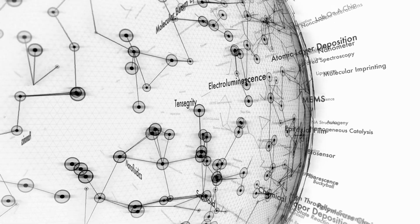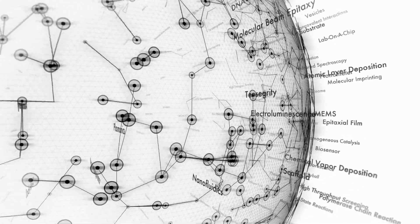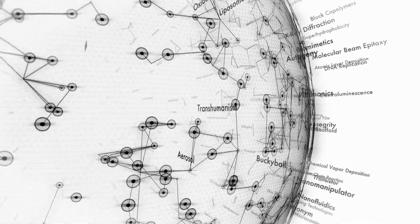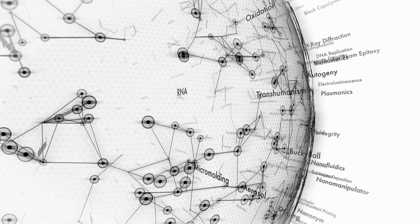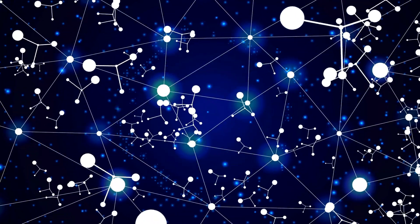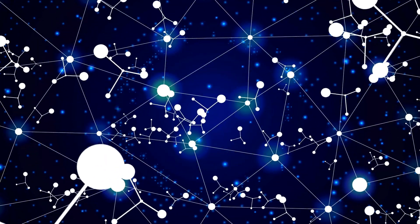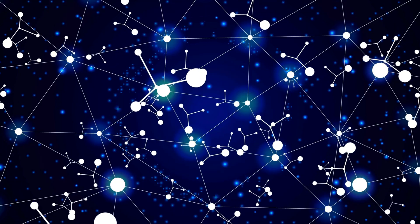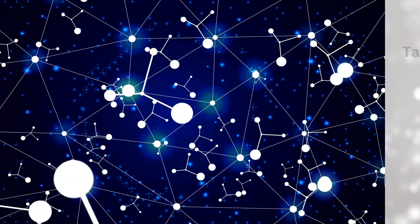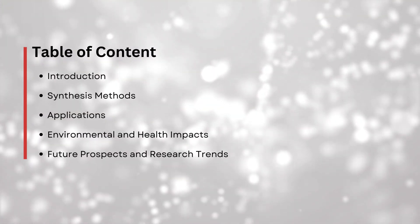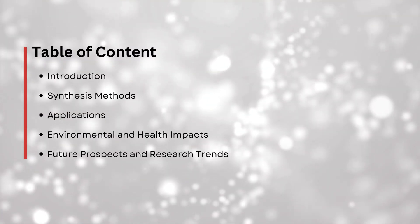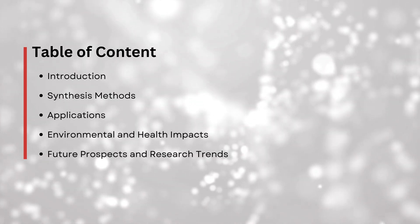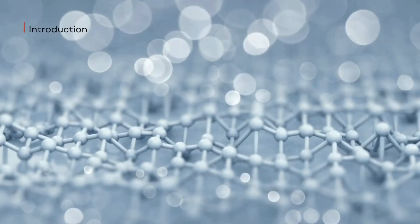Hi, everyone. Welcome back to TechInstro. Today, we're diving into the fascinating world of zinc oxide nanoparticles. These tiny particles are packed with potential, being used in everything from sunscreens to electronics. But how are they made? Where are they applied? And what impact do they have on our environment? Let's find out.